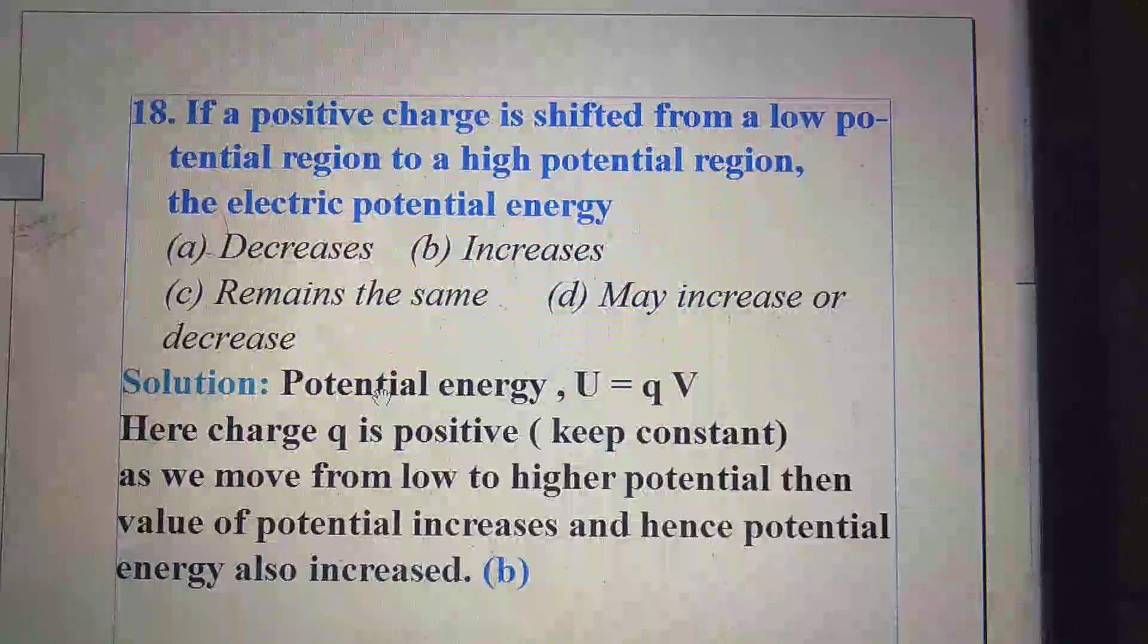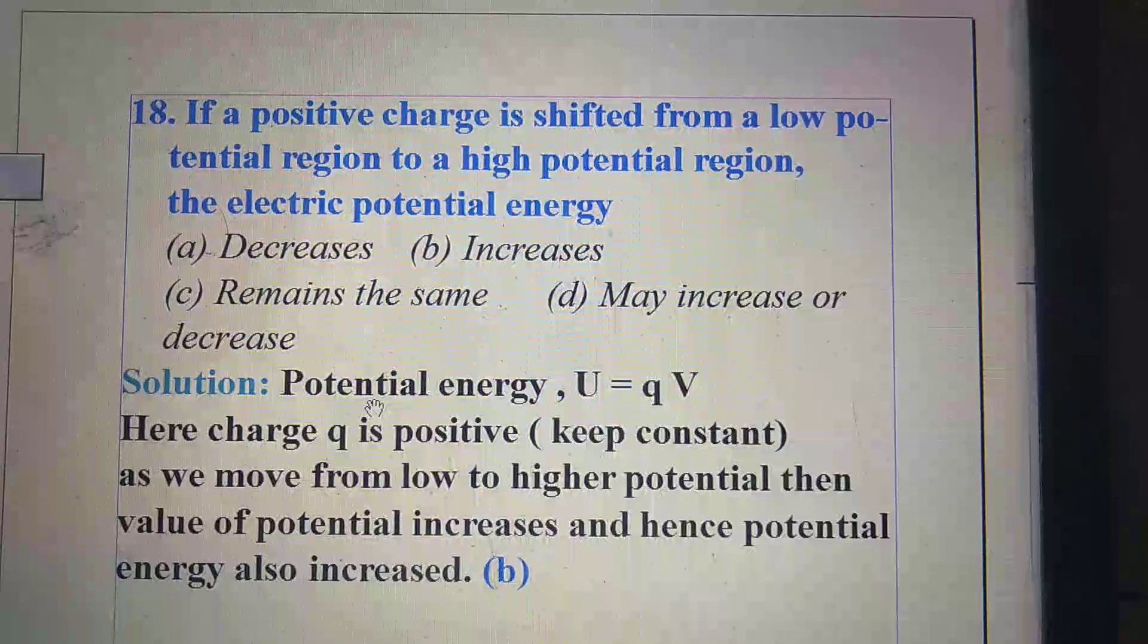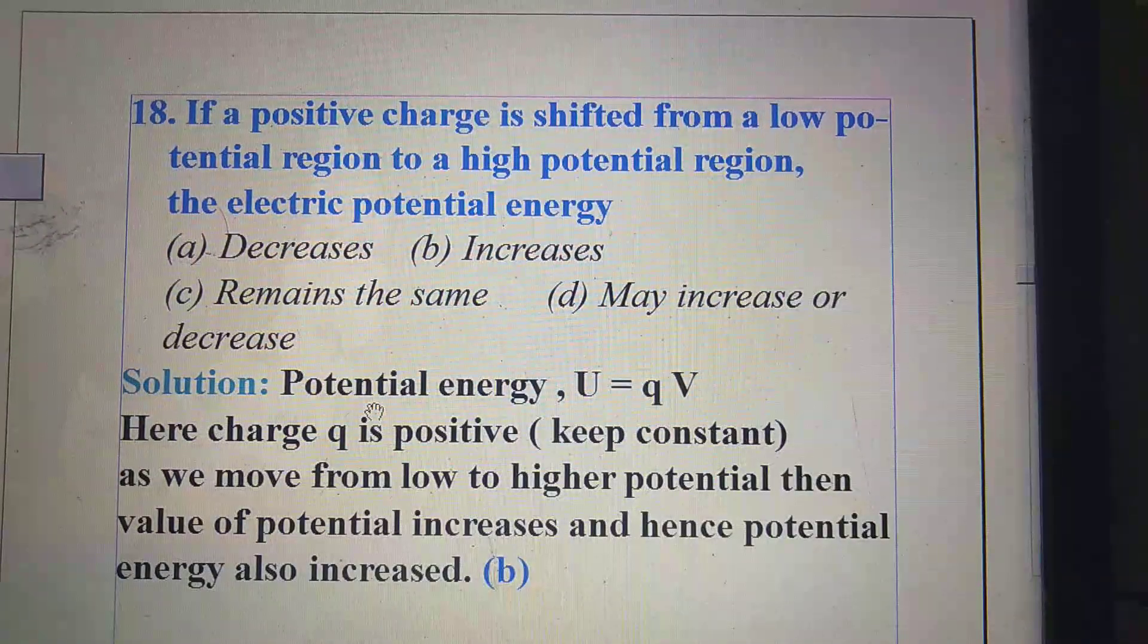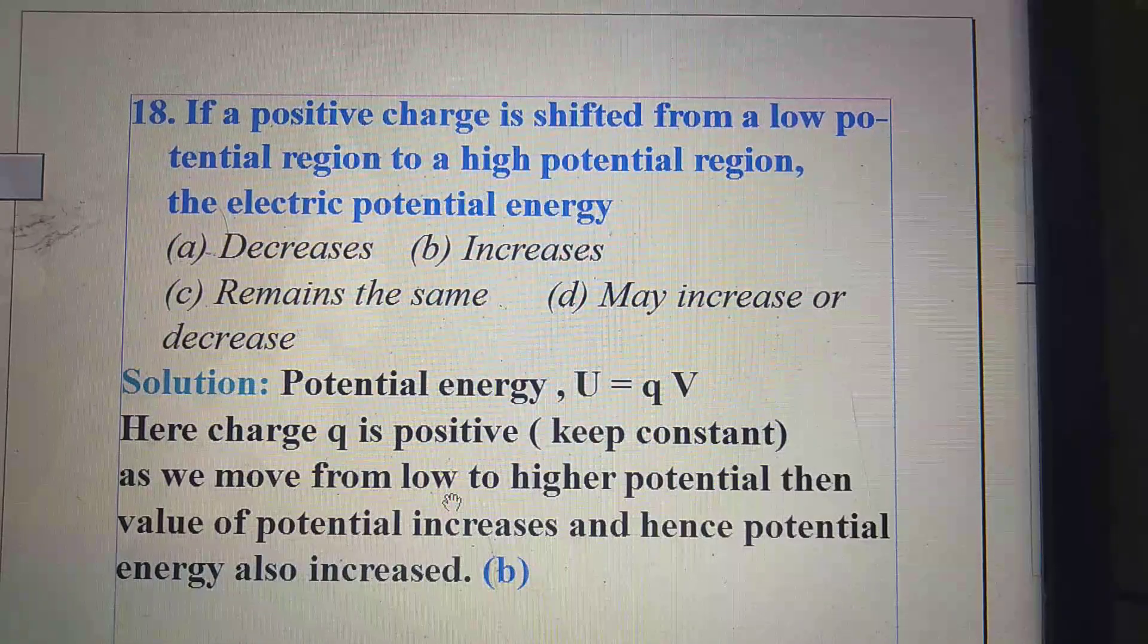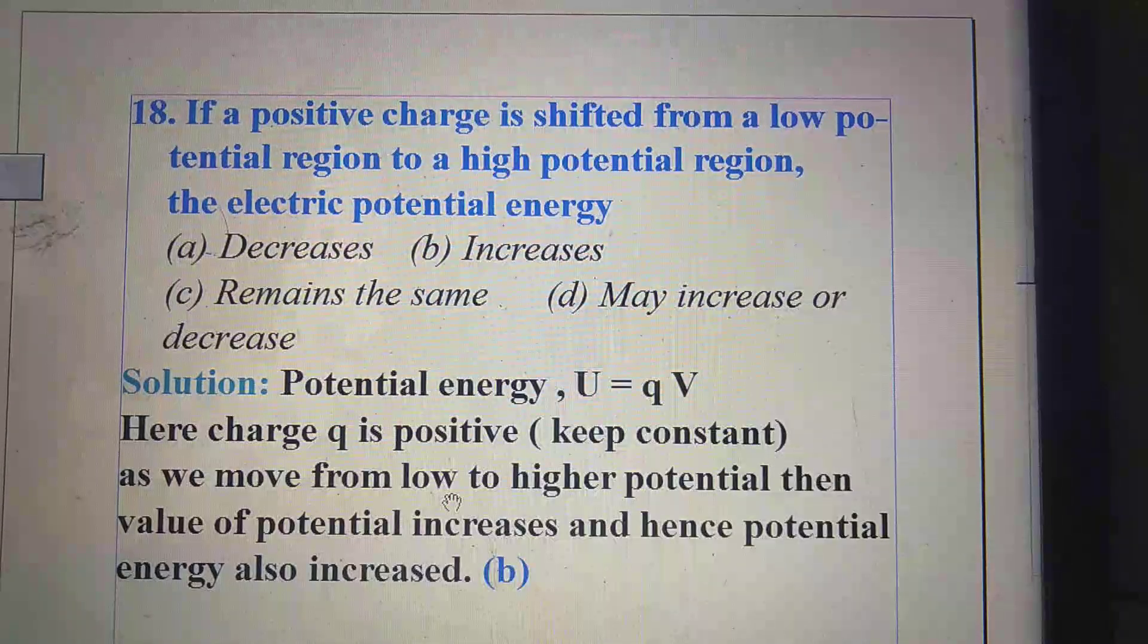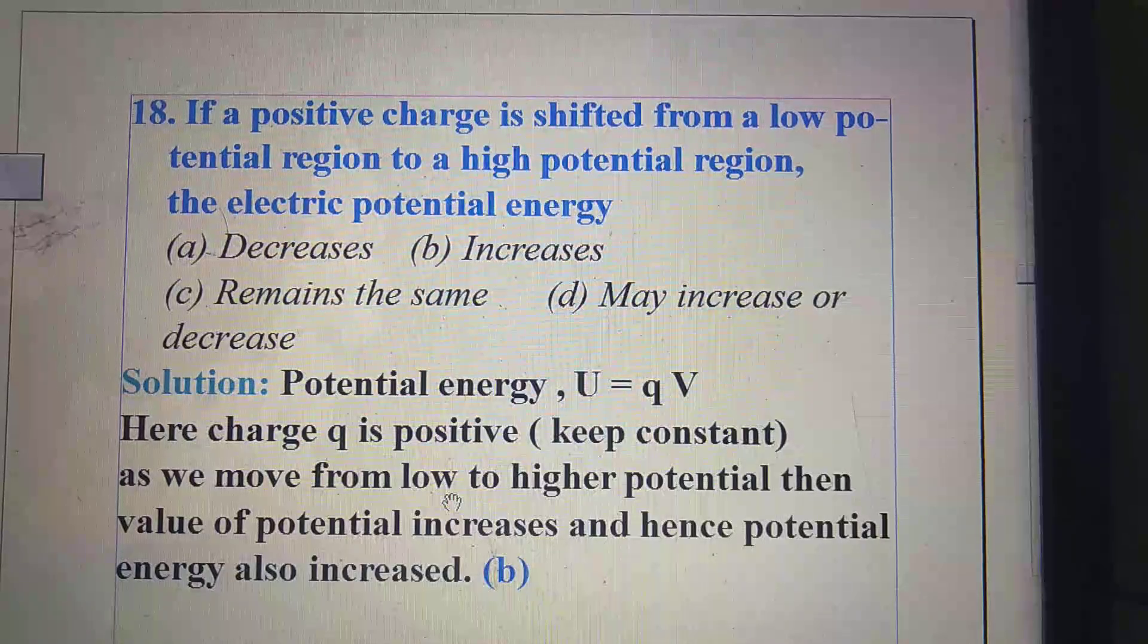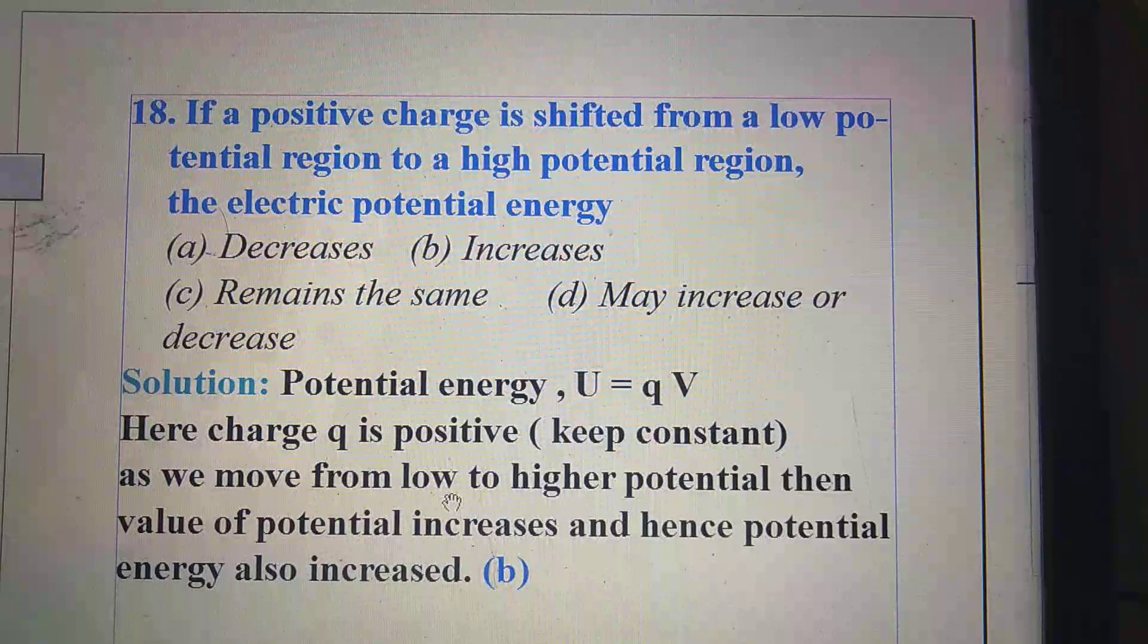Next question. If a positive charge is shifted from a low potential region to a high potential region, the electric potential energy: option A decreases, option B increases, option C remains the same, and option D may increase or decrease.